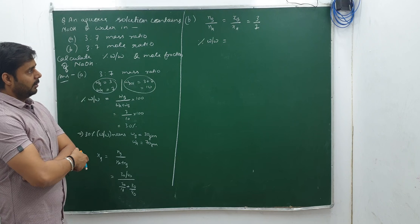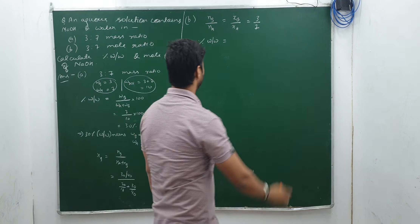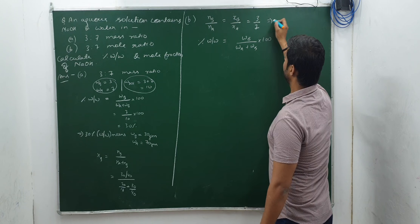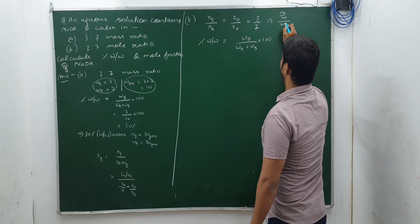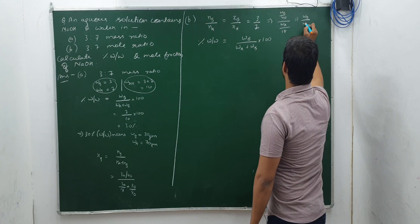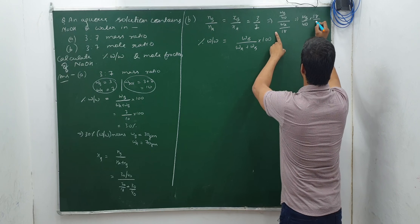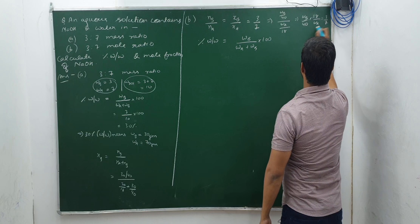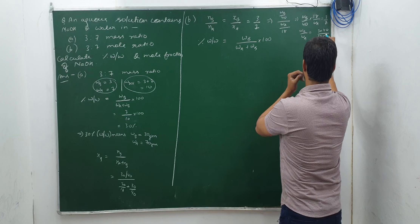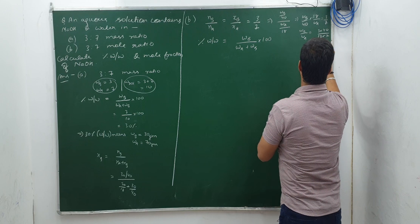Percentage w/w = W_B / (W_A + W_B) × 100. We know W_B = N_B × M_B and W_A = N_A × M_A. For NaOH, M_B = 40; for water, M_A = 18. So W_B / W_A = (N_B × 40) / (N_A × 18) = (3/7) × (40/18) = 120/126 = 20/21.